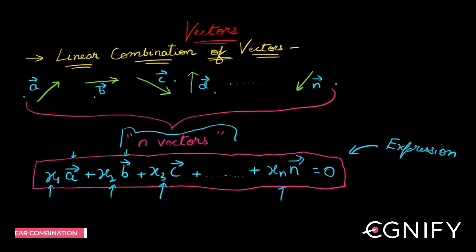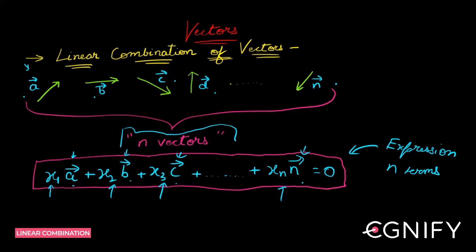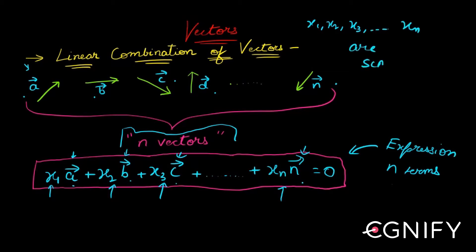You already know what ā, b̄, c̄, and so on up to n̄ are — there are n vectors and n terms in this expression. You can clearly see these are all vectors. But what about x1, x2, x3, and so on up to xn? These are scalars. We already know what scalars are — they are just some real number being multiplied to the vector.